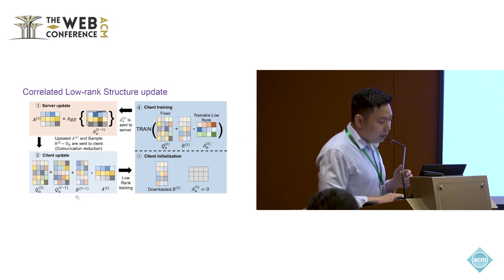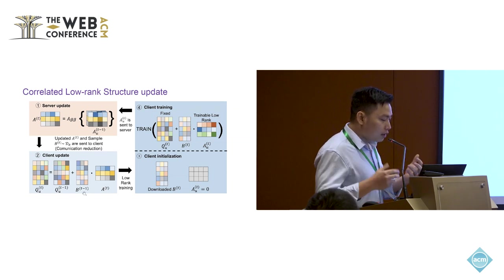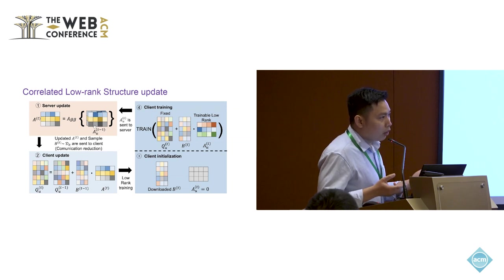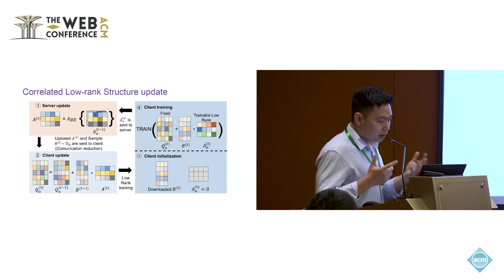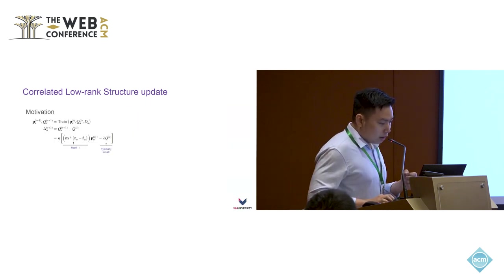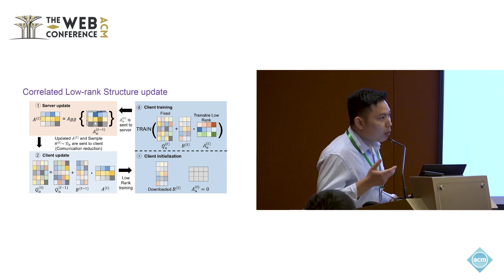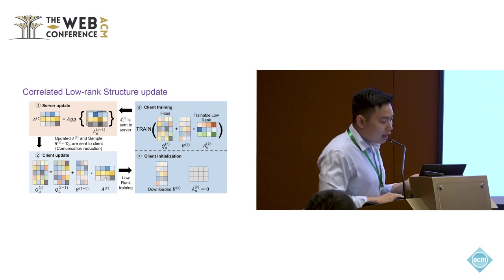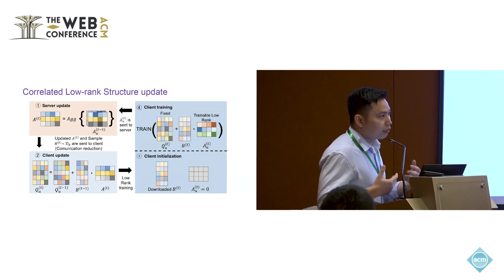Because matrix B is shared and the server also knows B, what the server needs to do is just perform the summation of all the matrices A sent by all the clients. This reduces the communication cost of the entire network. Furthermore, this method allows you to perform additive homomorphic encryption because you only do additions. You can require the client to encrypt matrix A only, and the server can still perform additions over all the matrices A without needing to know what matrix A was actually sent from each client.